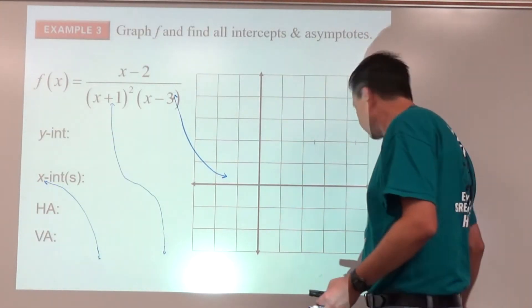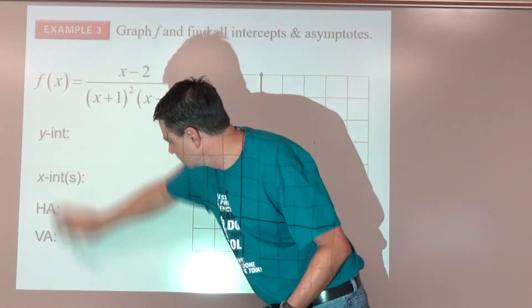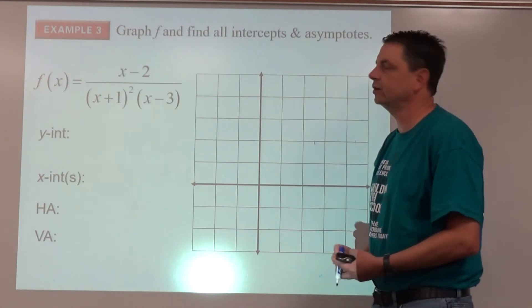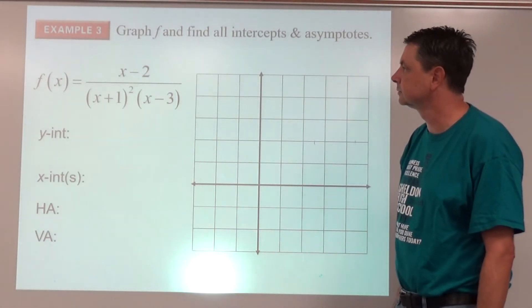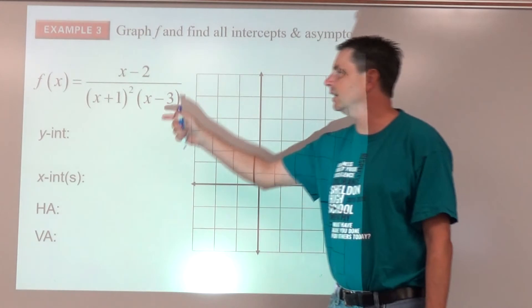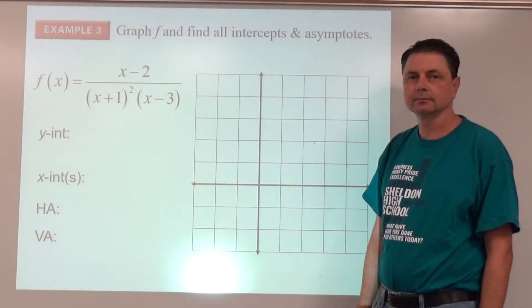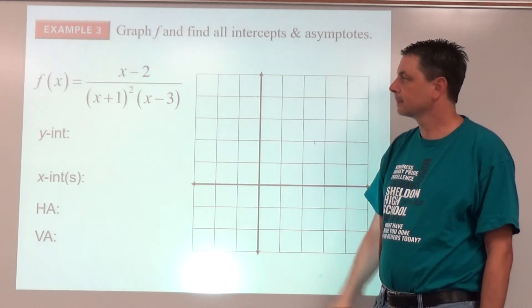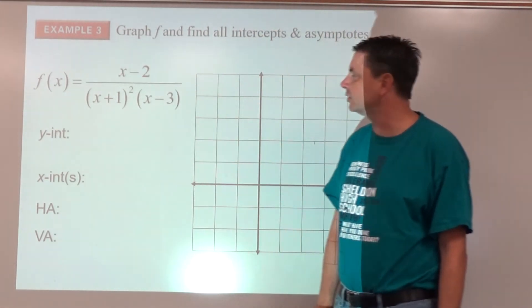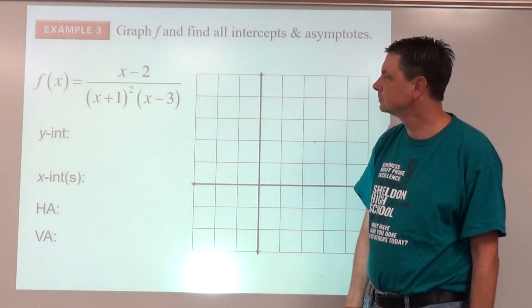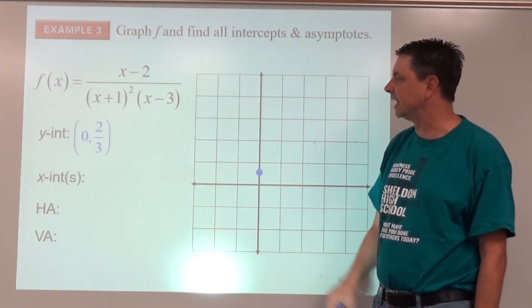Example three: graph f of x and find all intercepts and asymptotes. Find the y-intercept by plugging in zero for x — f(0) equals two-thirds, so we plot that point.